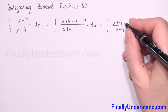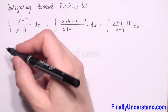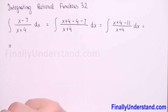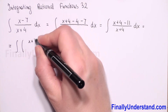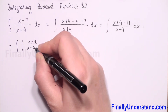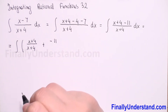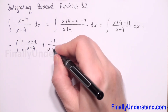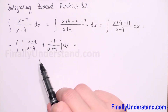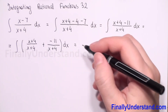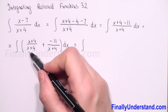In the numerator we have x plus 4, and negative 4 plus negative 7 gives negative 11. So now I can rewrite this rational expression as two fractions: the integral of (x plus 4) over (x plus 4), plus the integral of negative 11 over (x plus 4), dx. The integral of a sum is the sum of integrals.